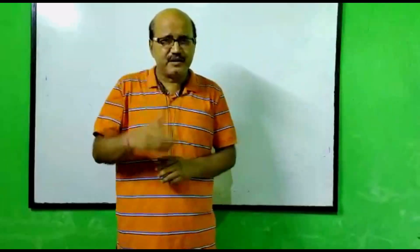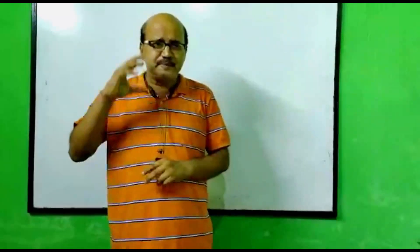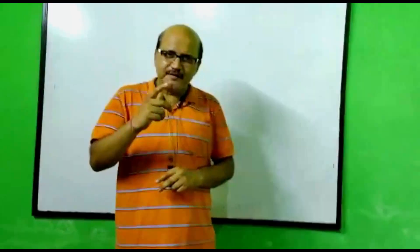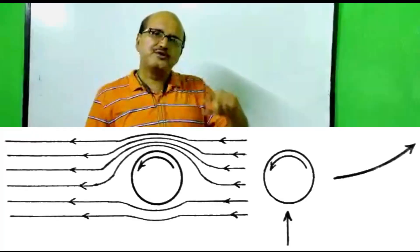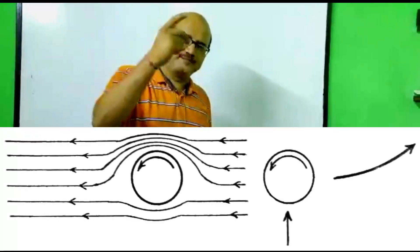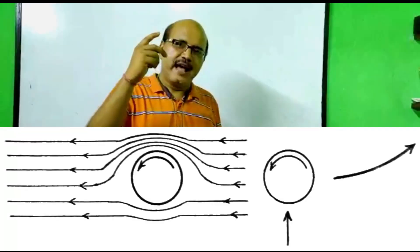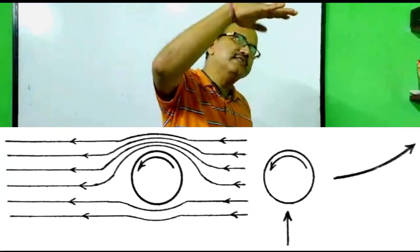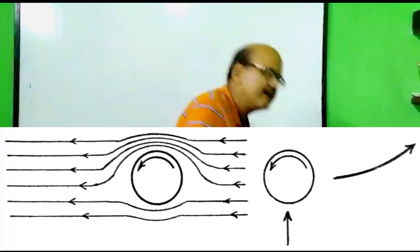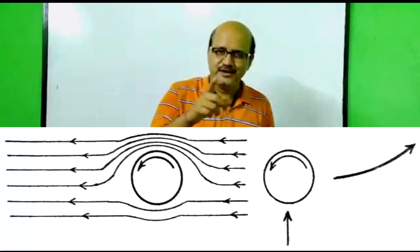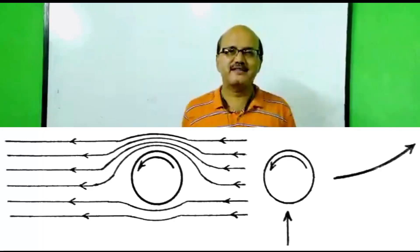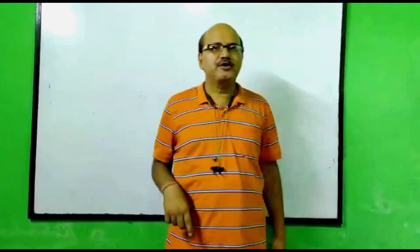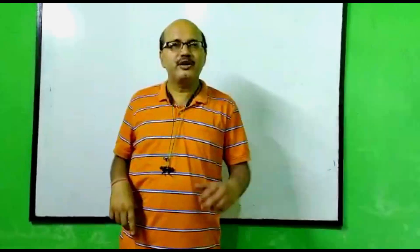You have heard of spin bowling. When you try to spin a ball, after going for a particular flight, suddenly the ball drops down. It's called the Magnus Effect, and this can also be explained by Bernoulli's principle.